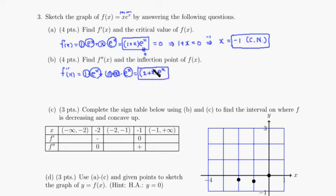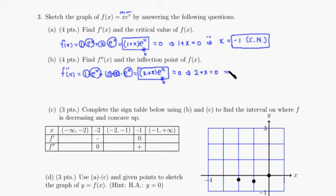We look for the inflection point, so we set the second derivative equal to 0. Again, e to the x is never 0, so we set 2 plus x equal to 0. Subtracting 2 from both sides gives x equals negative 2. This is the x-coordinate of a possible inflection point.